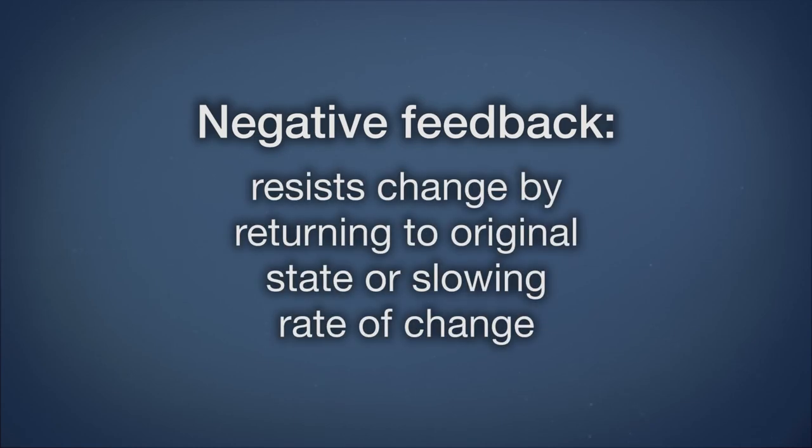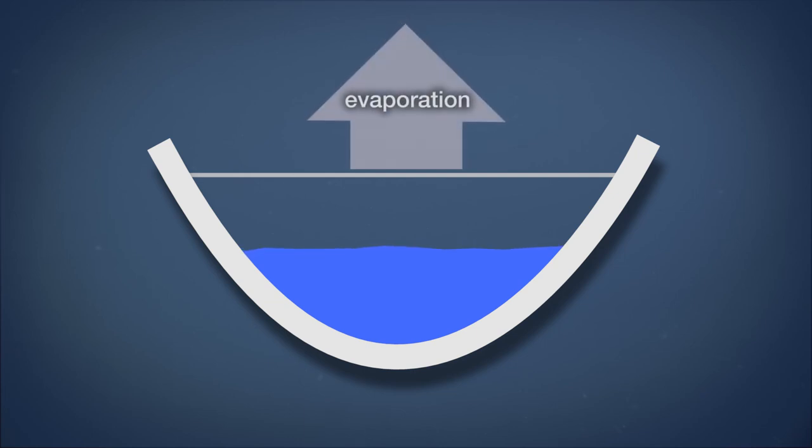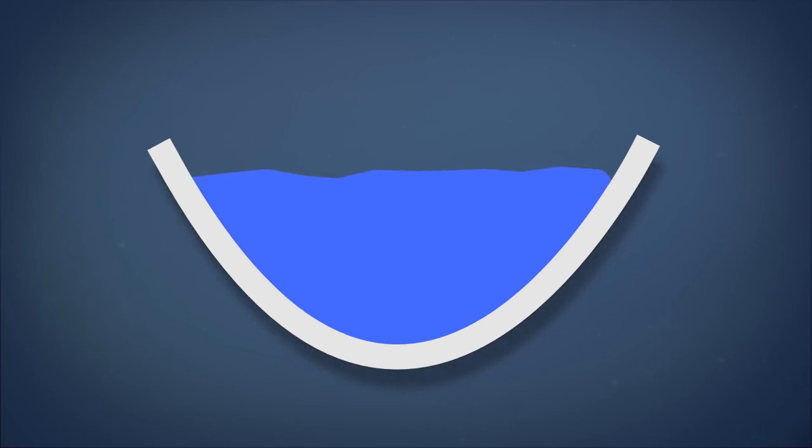Negative feedback loops occur when a system resists change by returning to its original state, or at least decreasing the rate at which the change is occurring. In a lake, when the water level drops, the surface area for evaporation in that lake is reduced, and evaporation decreases, causing the water level to rise. That's an example of a negative feedback system.